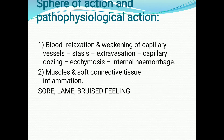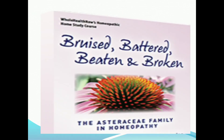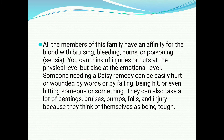The sphere of action and pathophysiological action of this family includes blood relaxation and weakening of capillary vessels, stasis inside the vessel, extravasation, capillary oozing, ecchymosis, and internal hemorrhage. It also acts on muscles and soft connective tissue, where there is inflammation with a sore, lame, bruised feeling. Members of this family have an affinity for blood conditions involving bruising, bleeding, burns, poisoning, and sepsis — which is why most homeopathic injury medicines come from this family.